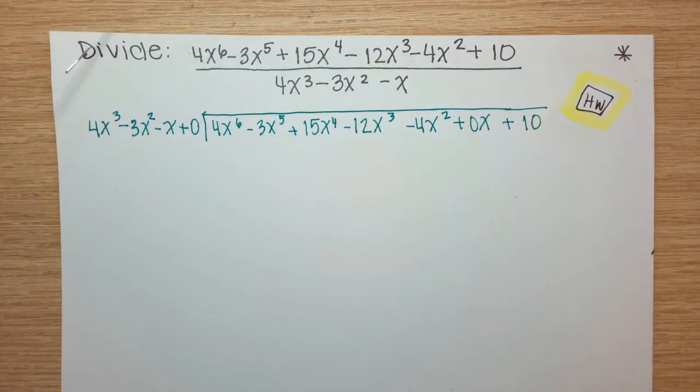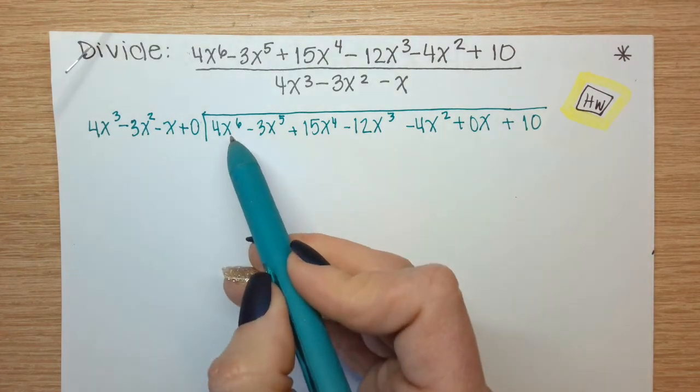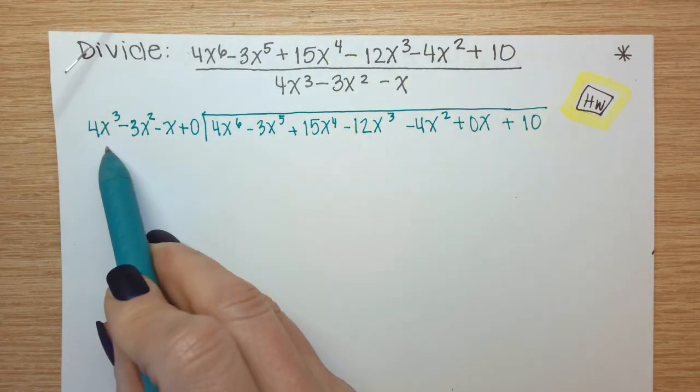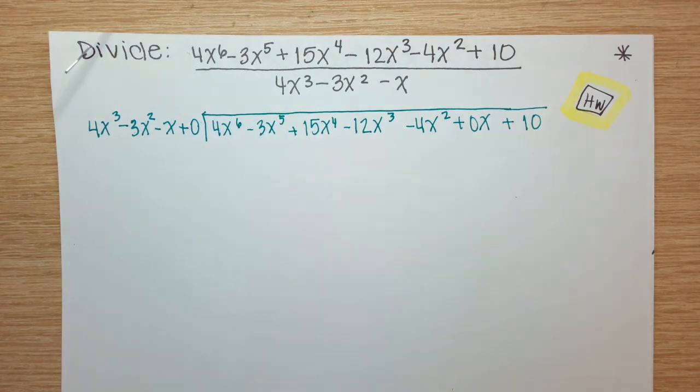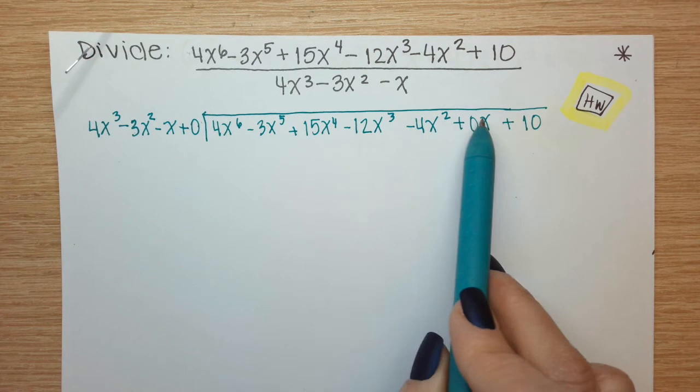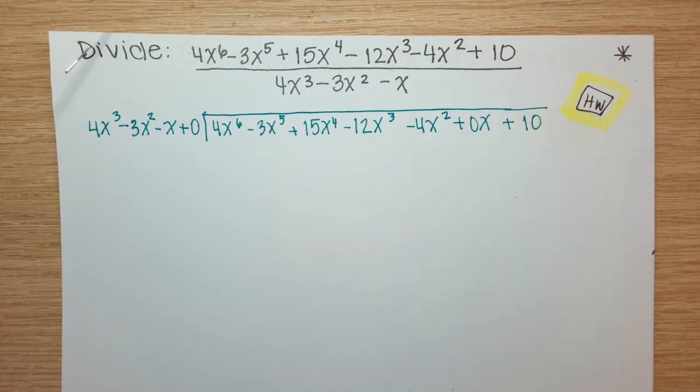Things that I can pay attention to, I'm dividing a 6th degree polynomial by a third degree. That means my answer should be a third degree. So I will have at most four terms and possibly a remainder.